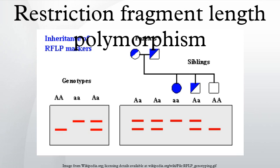RFLP is still a technique used in marker-assisted selection. Terminal restriction fragment length polymorphism is a molecular biology technique initially developed for characterizing bacterial communities in mixed-species samples. The technique has also been applied to other groups including soil fungi. TRFLP works by PCR amplification of DNA using primer pairs that have been labeled with fluorescent tags. The PCR products are then digested using RFLP enzymes and the resulting patterns visualized using a DNA sequencer. The results are analyzed either by simply counting and comparing bands or peaks in the TRFLP profile, or by matching bands from one or more TRFLP runs to a database of known species.